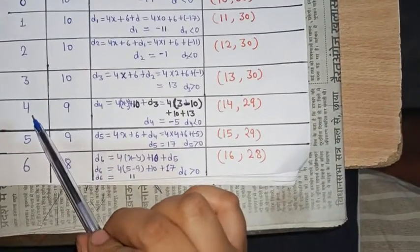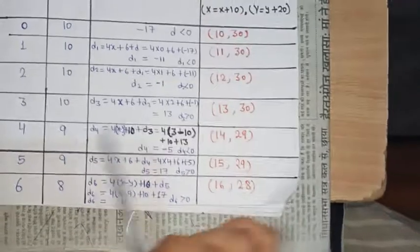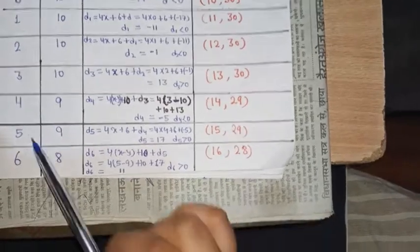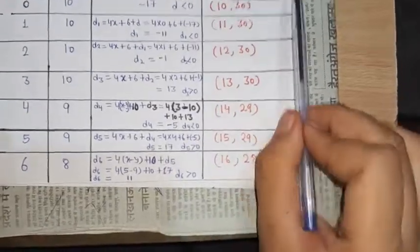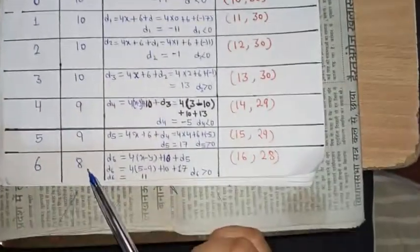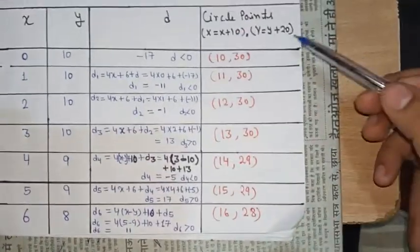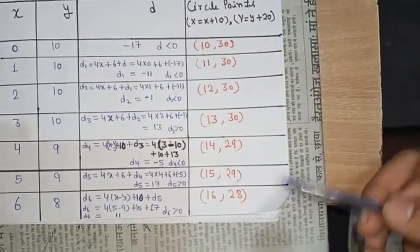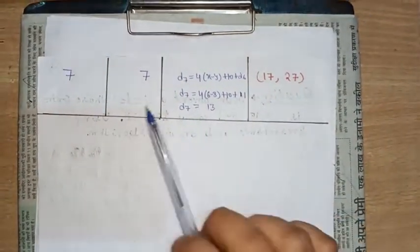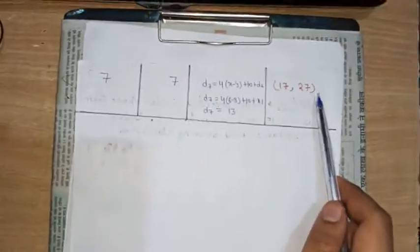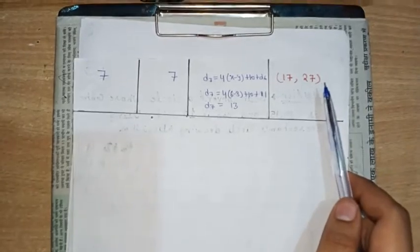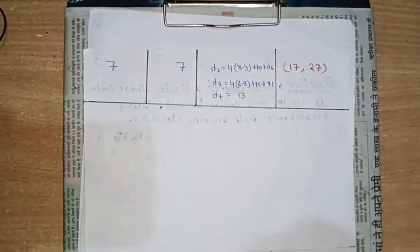Next: 10 + 4 = 14, 9 + 20 = 29, giving (14, 29). Then 5 + 10 = 15, 9 + 20 = 29, giving (15, 29). Then 6 + 10 = 16, 20 + 8 = 28, giving (16, 28). And the last point: 10 + 7 = 17, 20 + 7 = 27, giving (17, 27). This is how we can draw a circle using the Bresenham circle drawing algorithm. Thank you very much.